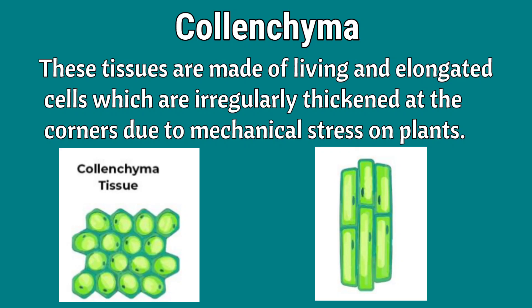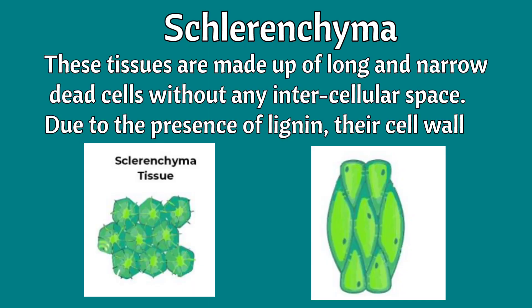Next, sclerenchyma: these tissues are made up of long and narrow dead cells without any intercellular space, due to the presence of lignin in their cell walls. Look at this picture — you can observe the arrangement of cells here. These are dead cells with no intercellular spaces due to the presence of lignin.